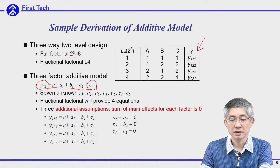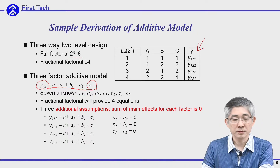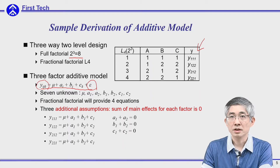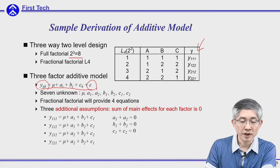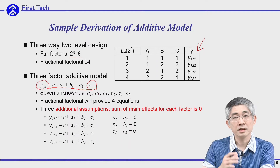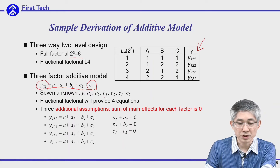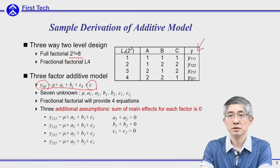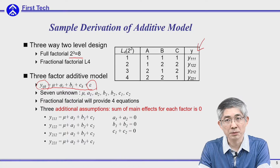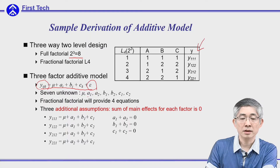Since we have two levels, we need to find a1, a2, b1, b2, c1, and c2, plus mu — seven unknowns in total. We have L4 with four experiments, giving us four equations, which is underdetermined. We therefore add additional constraints: the summation of all main effects for each factor equals zero, so a1 plus a2 equals zero, and similarly for b and c. This gives us four plus three — seven equations total — enough to solve for all unknown variables mu, a1, a2, b1, b2, c1, and c2.